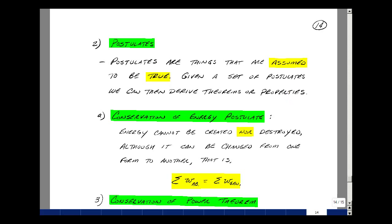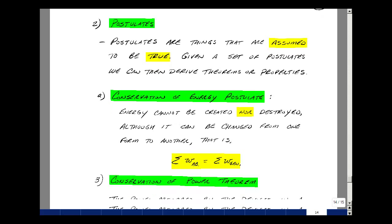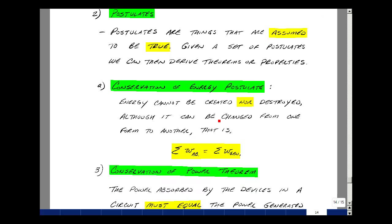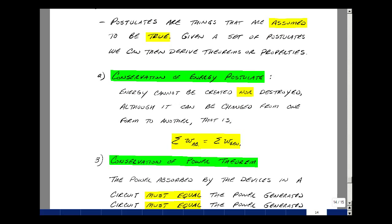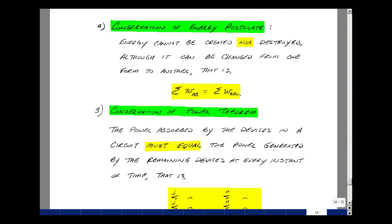First postulate in circuits is the conservation of energy. Let me just state this. Energy cannot be created nor destroyed, although it can be changed from one form to another. What that means is that if you add up all the energy absorbed, it has to equal all of the energy generated. Now if this is true, then the consequence of this would be what we call the conservation of power.